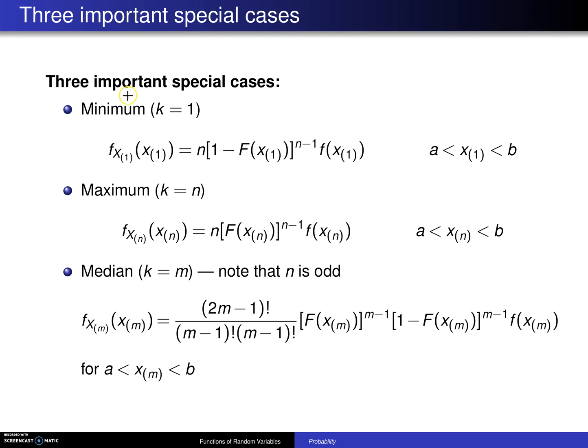The second important special case that is of interest is the largest value. This is sometimes used in something known as extreme value theory, where you consider the highest flood in a particular region for a 100-year or a 500-year period, for example.